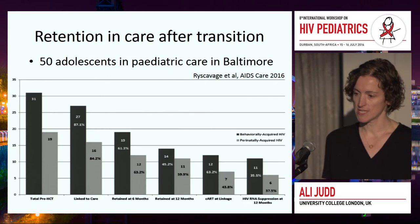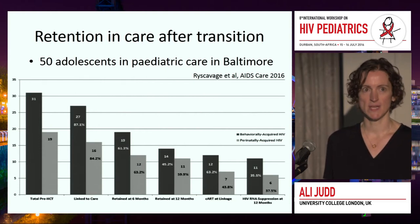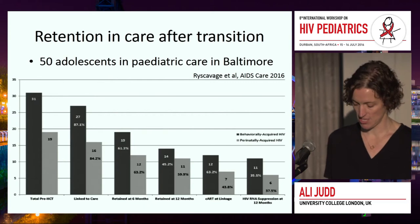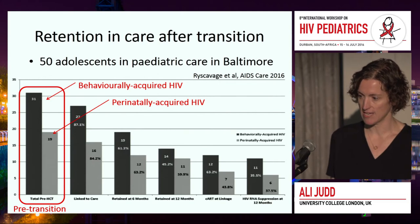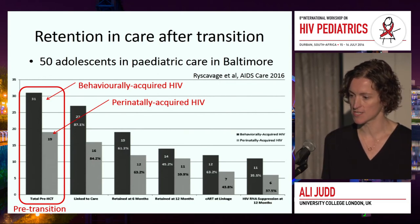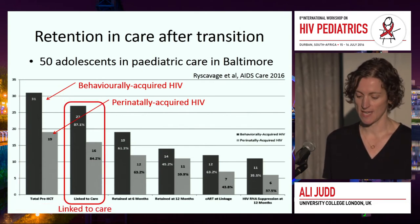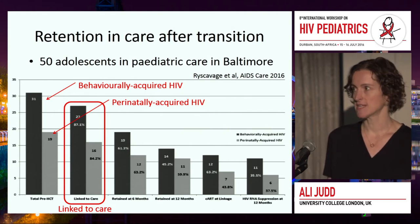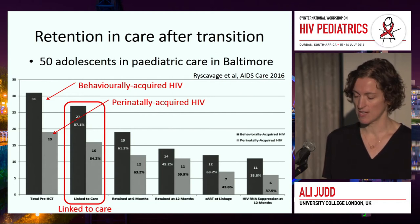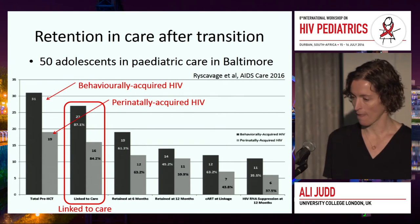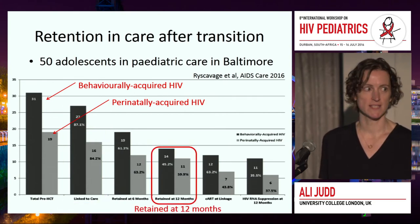This is a transition cascade of care from researchers in Baltimore. They took 50 adolescents in paediatric care and looked at what happened when they transitioned to adult care — 31 with behaviourally acquired HIV and 19 with perinatal HIV. Their endpoint was retention in adult care. They found about 85% were successfully linked to care. Interestingly, this population transitions to adult care at a later age, around 22 to 25 years, which is related more to insurance issues than maturity or readiness to transition. But only 50% were retained in adult care at 12 months.